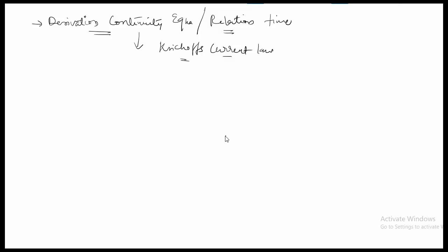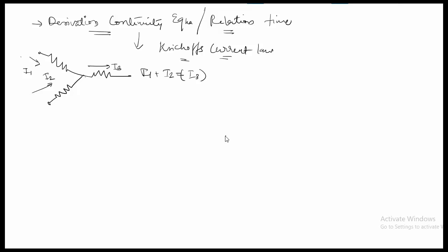Kirchhoff's current law states that if there is a node with three resistors connected to it, and the currents flowing through the branches are i1, i2, and i3, then i1 plus i2 will always equal i3. The current incoming will always equal the current outgoing through any node, or even for a simple conductor — whatever current enters will equal the current leaving.